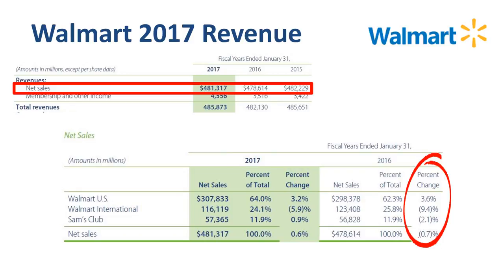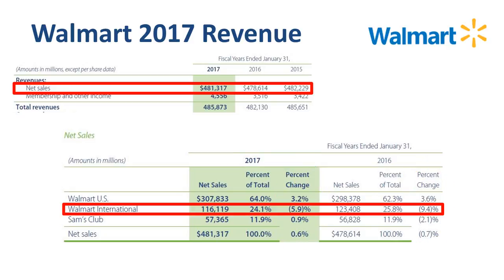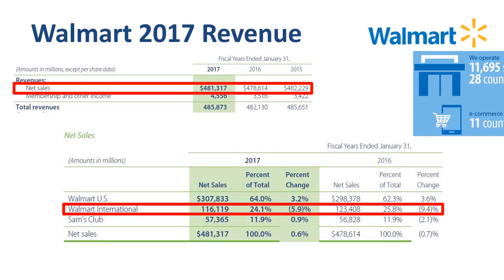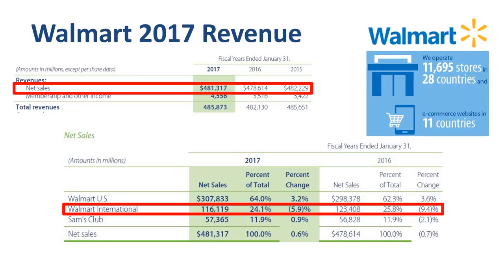For overall net sales there was a decline in 2016 vs. 2015, and an increase in 2017 vs. 2016. One of the three segments immediately jumps out at me — Walmart International, with a decline in 2016 of 9% and 2017 of 6%. I think it is important to analyze what is going on here first, as these declines are impacting the overall growth number significantly.